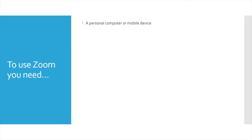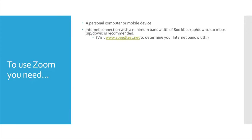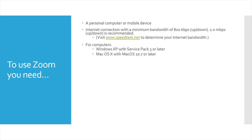So let's talk about what you need to use Zoom. First of all, you need a personal computer or mobile device, whether a smartphone or a tablet. With a computer, you need an internet connection with a minimum bandwidth of 800 kilobytes per second. If you're not sure about how fast your internet connection is, I encourage you to visit speedtest.net — in just about a minute, it will tell you exactly how fast your upload and download speeds are. For computers, you'll need Windows XP with Service Pack 3 or later. If you're a Mac user, you'll need Mac OS 10.7 or later.